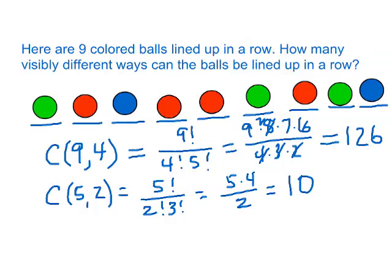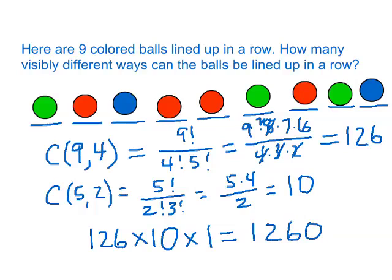And so I had 126 ways to position the red balls times ten ways to position the blue balls, and then that left no choice, just one way to do the green balls. But altogether that's 126 times ten, which is 1260 different ways to line those nine balls up in a row into recognizably different patterns.